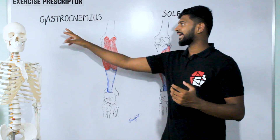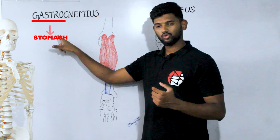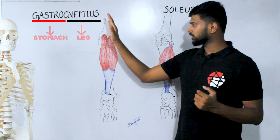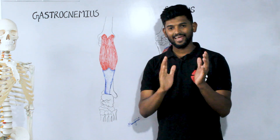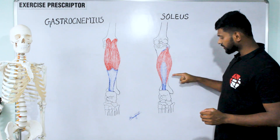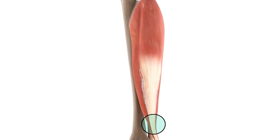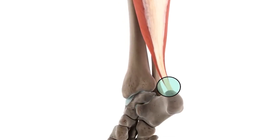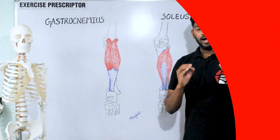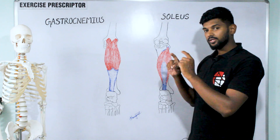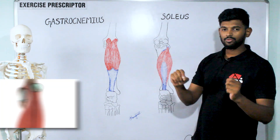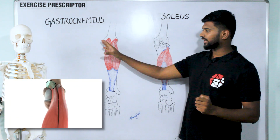'Cnemius' means leg, so this muscle is called gastrocnemius. Soleus is named because it is attached over the sole of the foot, so this muscle is called soleus.